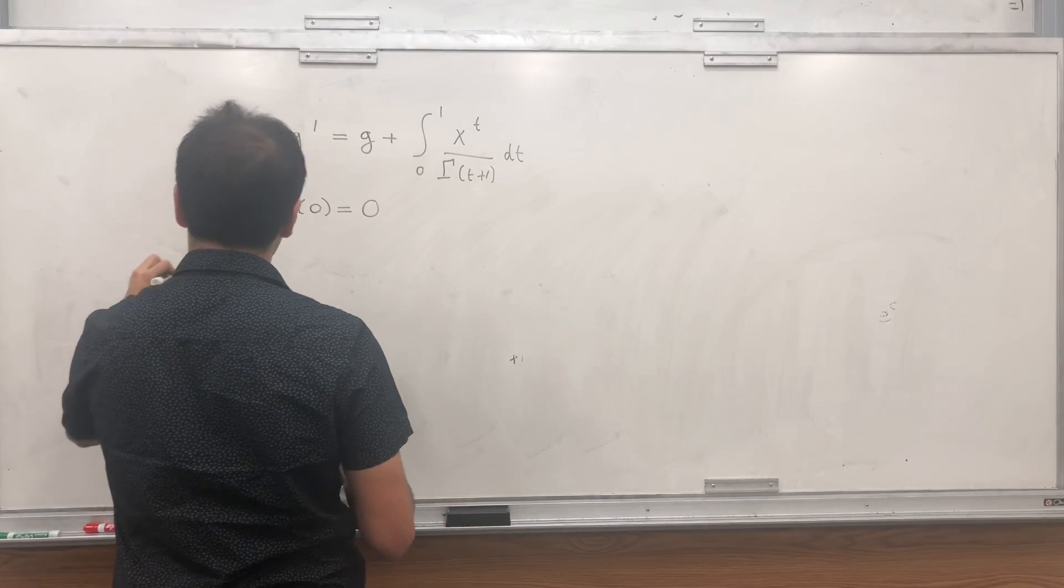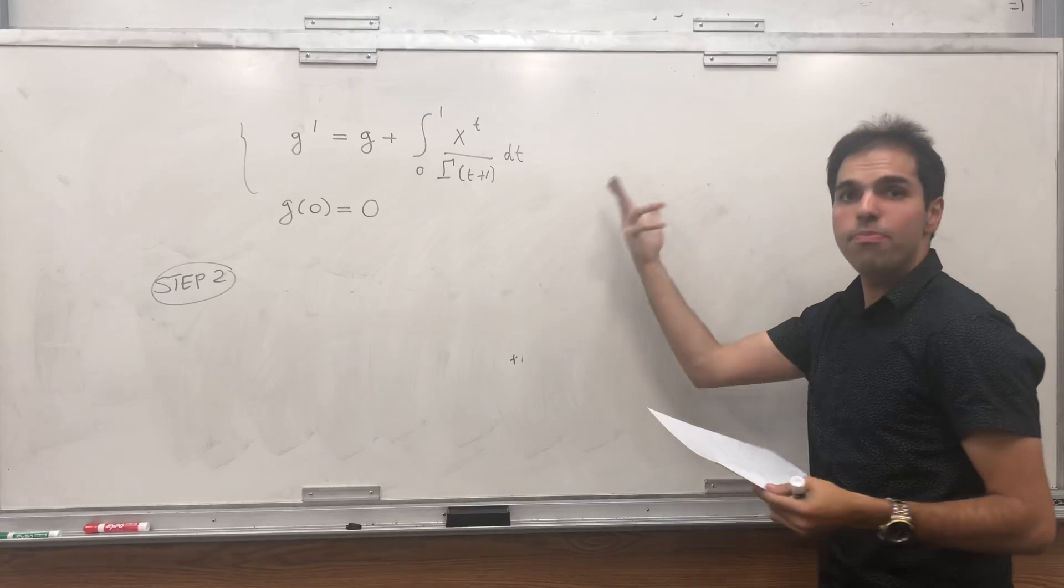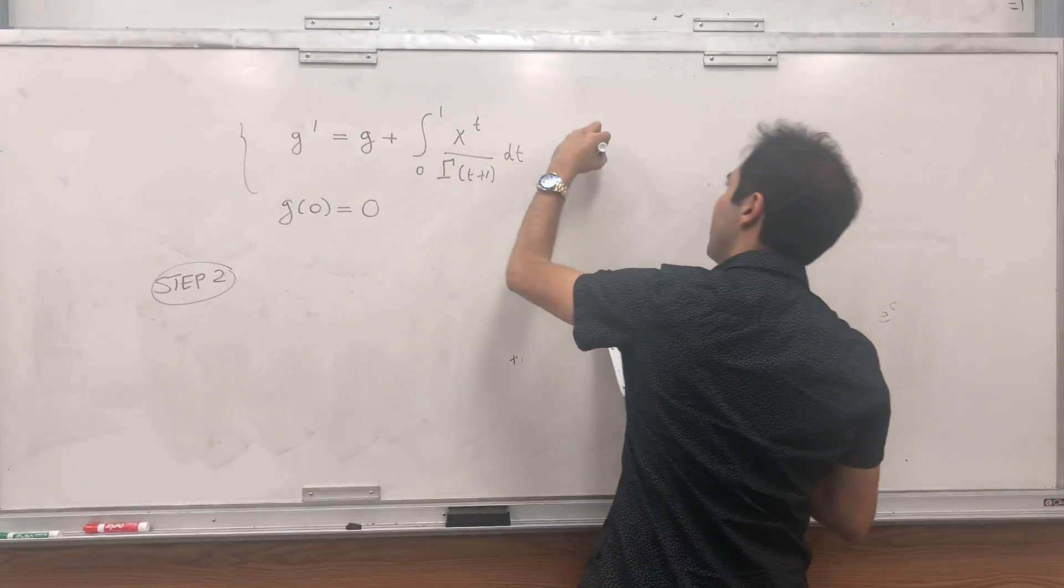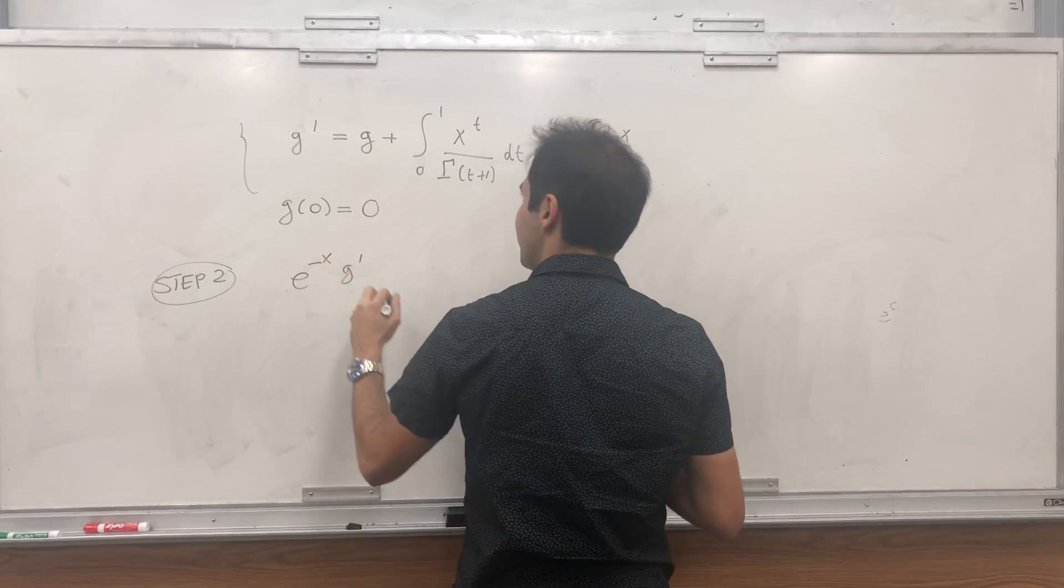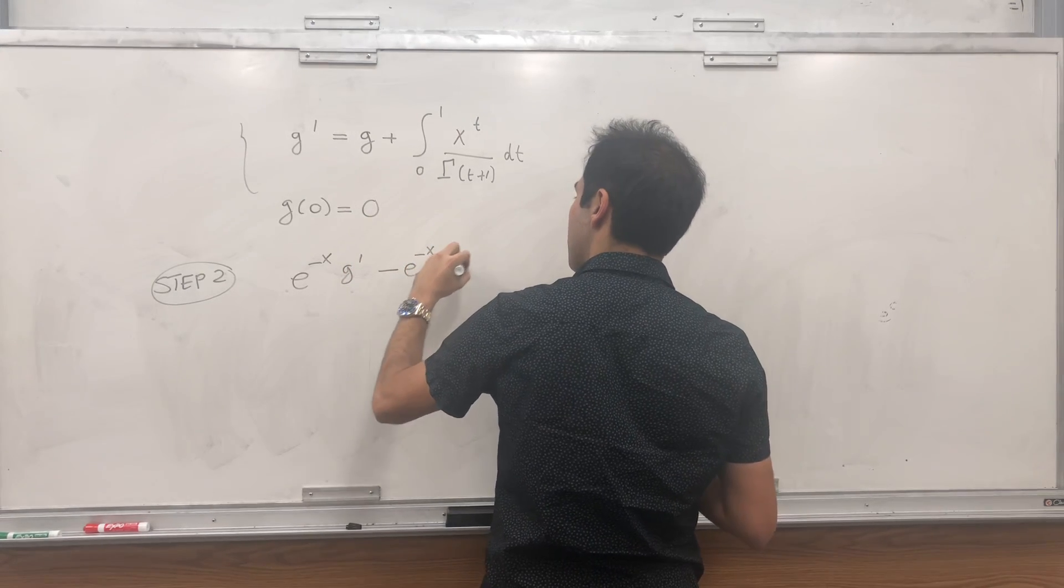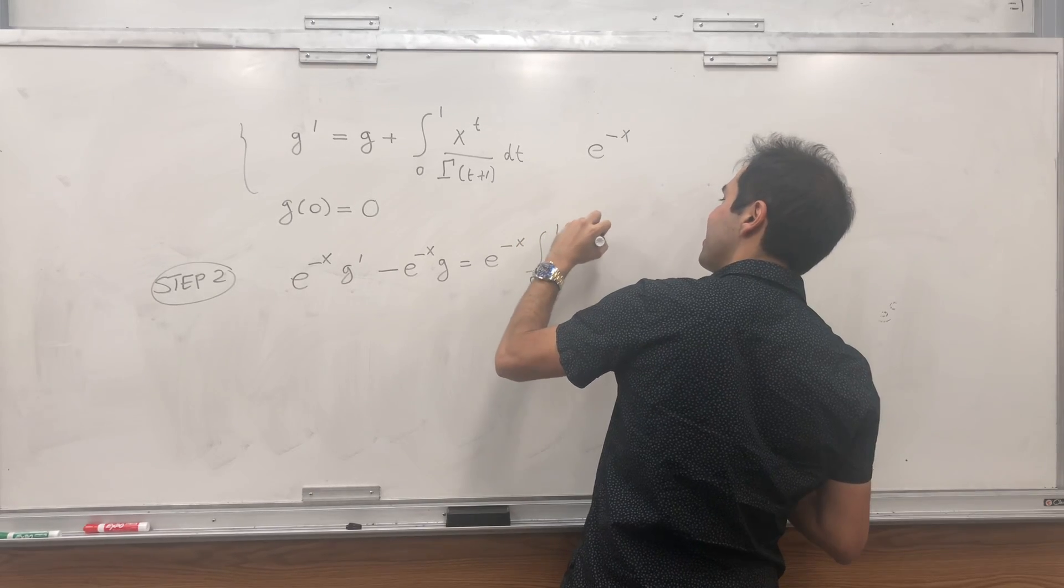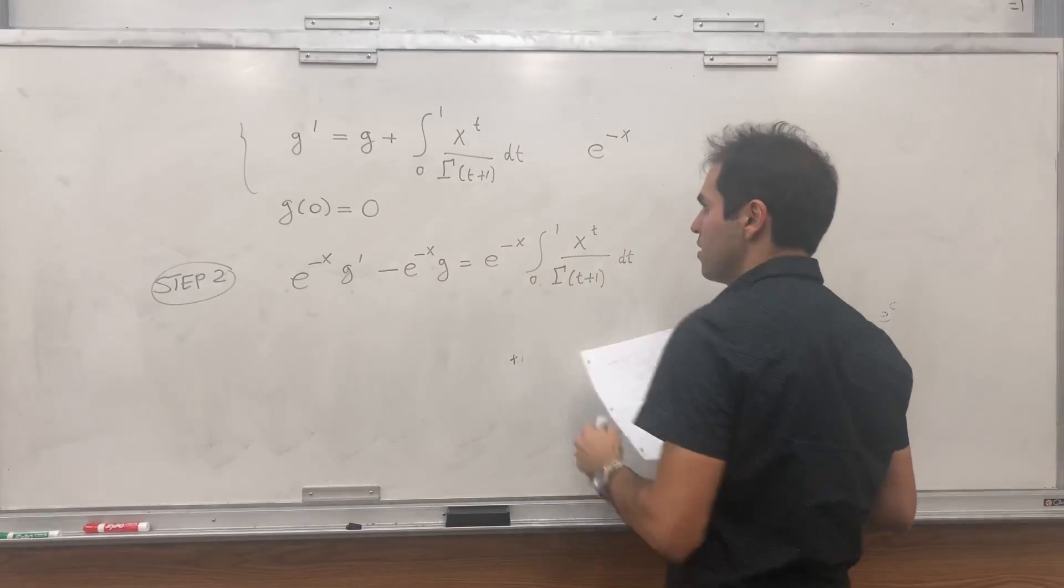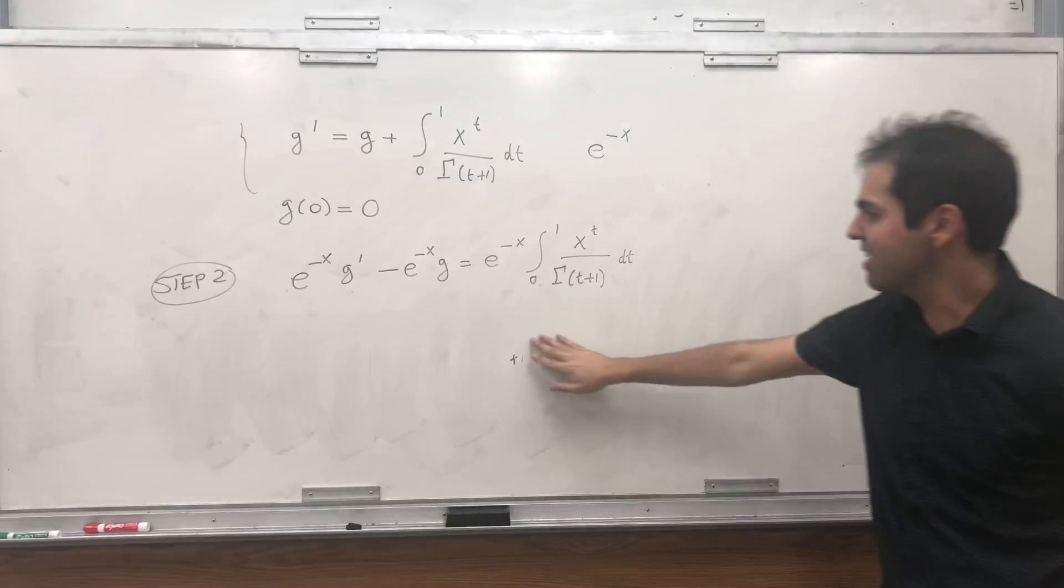So g satisfies this differential equation. And it turns out we can sort of find g from this. So step two. Well, take this differential equation and multiply it by integrating factor. So what we get, in particular, let's multiply both sides by e to the minus x. So e to the minus x g prime minus e to the minus x g equals e to the minus x integral from 0 to 1, x to the t over gamma of t plus 1 dt. I just moved g on the left hand side multiplied by e to the minus x.